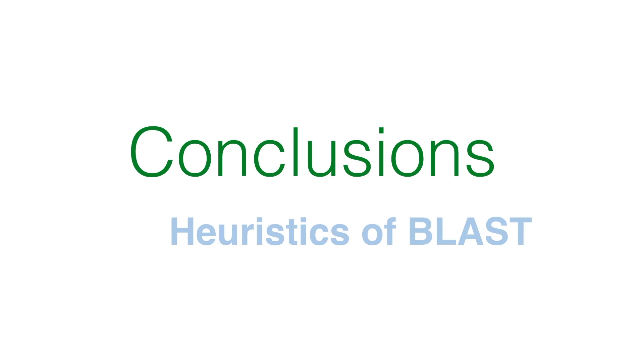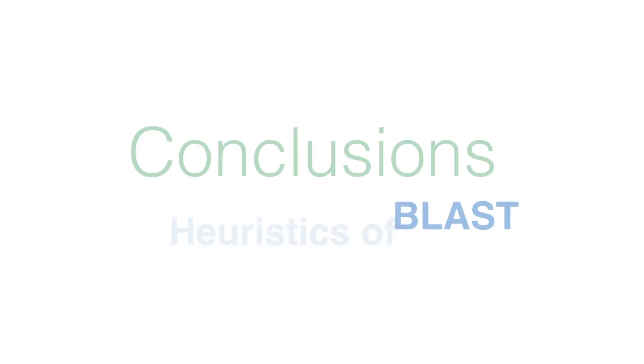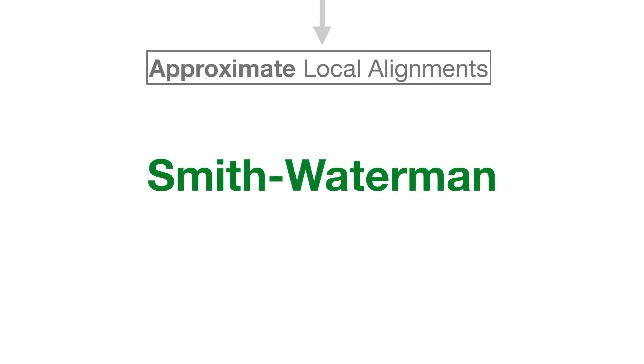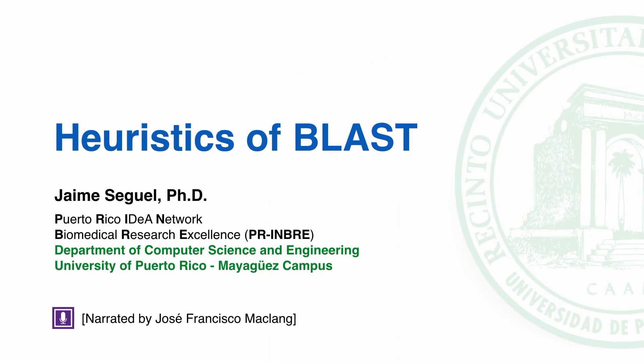We have discussed the heuristic observations that lead to BLAST, a software method that returns approximate local alignments in significantly less time than the exact local alignments obtained with the Smith-Waterman algorithm. The actual data structures and computations used in BLAST will be discussed in the next lecture.